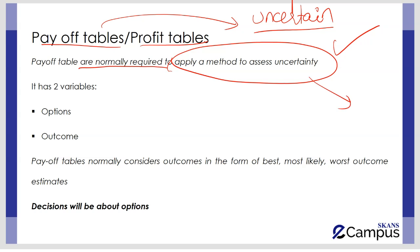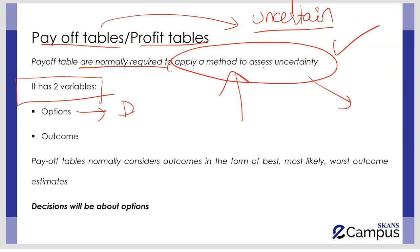We are going to learn the different methods to assess uncertainty in the next video lectures. Before that, we need to learn how to make a payoff table, because it can be required in the exam to construct one by calculating different possible profits, and because the payoff table is the base to apply different uncertainty assessment methods. A payoff table normally has two variables: the options — which are the different decisions in hand.